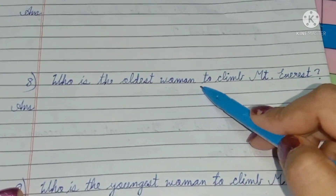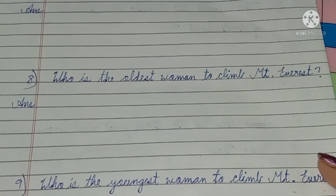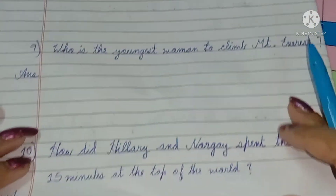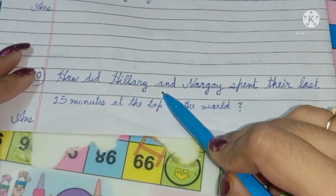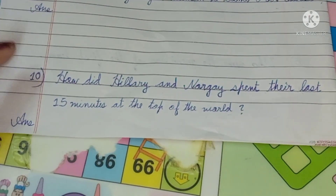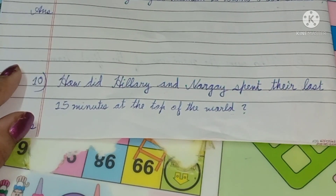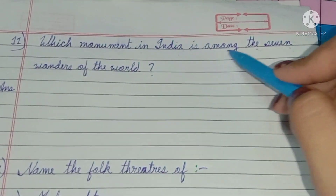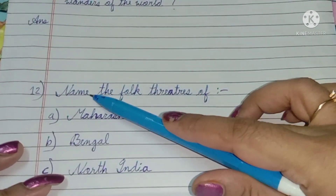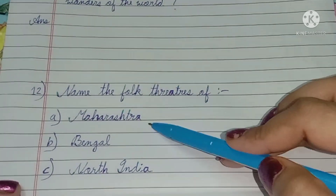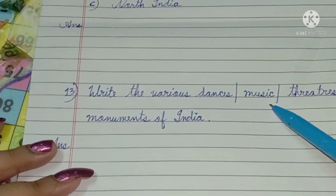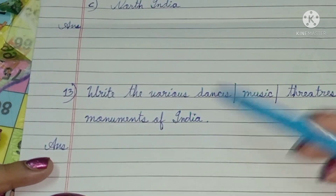Who is the oldest woman to climb Mount Everest? Who is the youngest woman to climb Mount Everest? How did Hillary and Norgay spend their last 15 minutes at the top of the world? Which monument in India is among the seven wonders of the world? Name the folk theatres of Maharashtra, Bengal and North India. Write about various dances, music, theatres, and monuments of India.